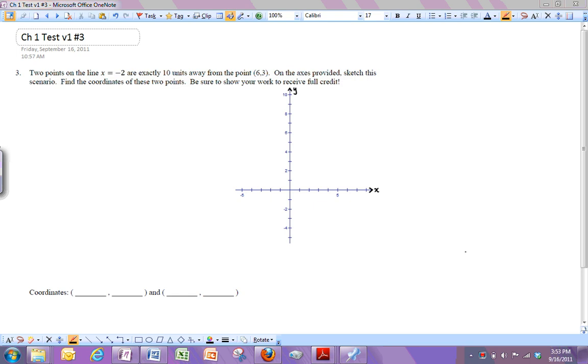Alright, let's do number 3 from version 1 of the chapter 1 test. Remember, make sure you're looking at the right test because there are 2 versions. Okay, so we've got 2 points on the line x equals negative 2, and they're 10 units away from the point, and our goal is to find where those coordinates are.